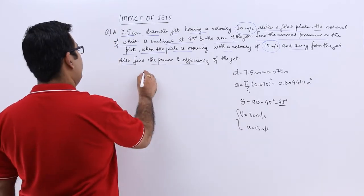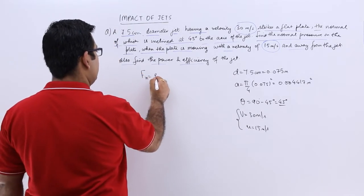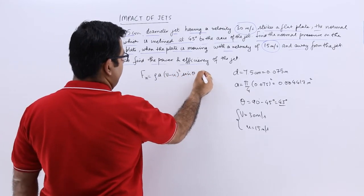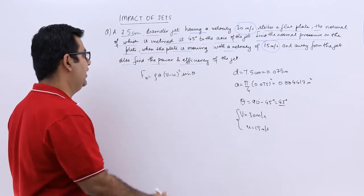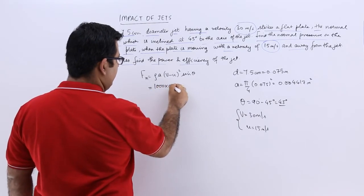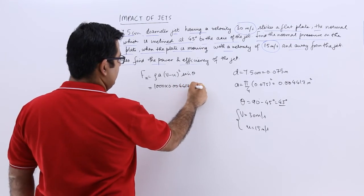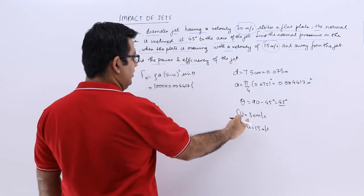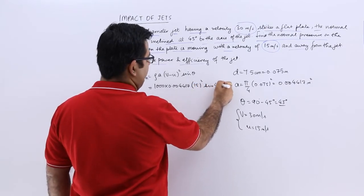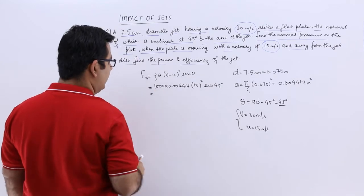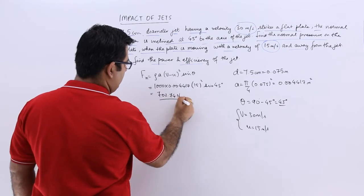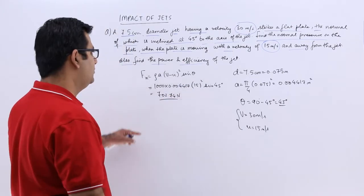The normal force formula is rho into A into (V minus u) whole square into sin theta. So you will have 1000 into 0.004417 into (30 minus 15) squared, which is 15 squared, and sin 45. When you calculate this, the normal force comes out to be 702.74 N.